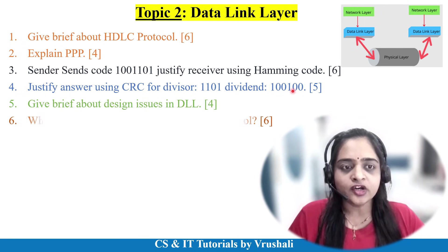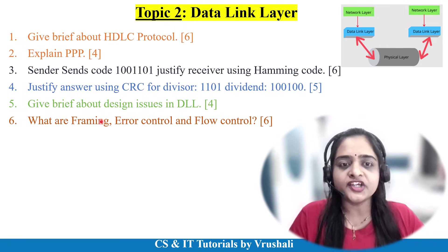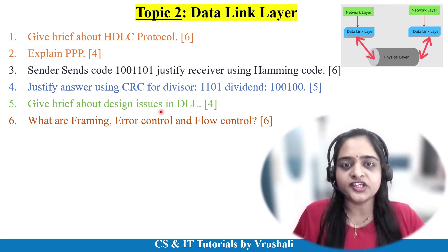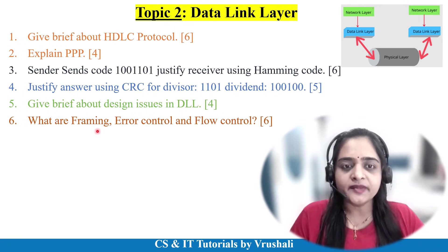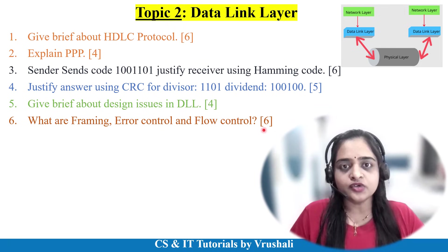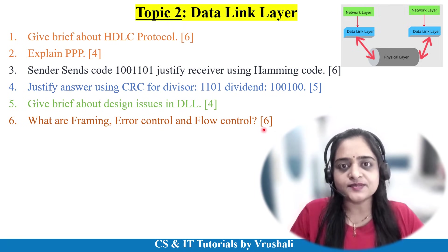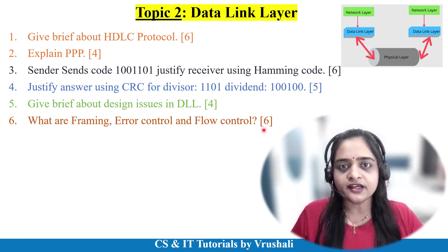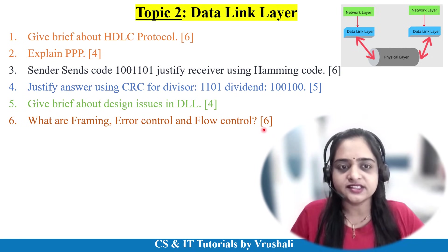The next theoretical question is a brief explanation about design issues in data link layer — highlight all the issues with their explanation for 4 to 6 marks. Also, explain framing, error control, and flow control for 6 marks separately. Explain framing with a simple example and necessary diagrams, then cover error control and flow control — examples are important.